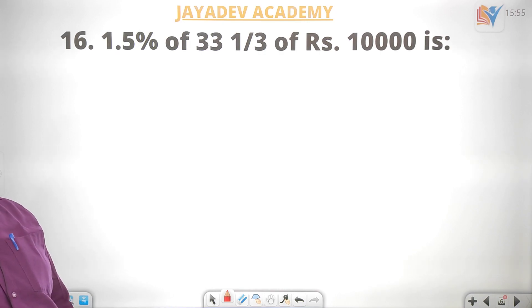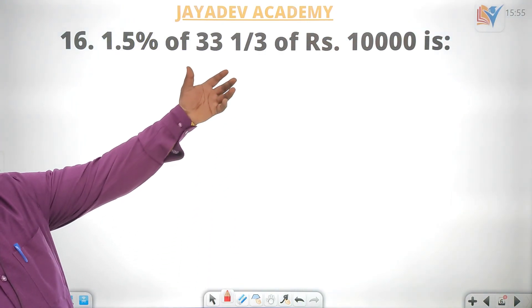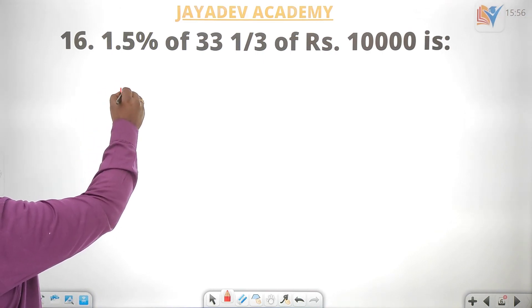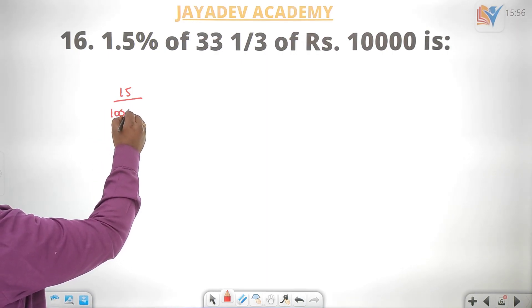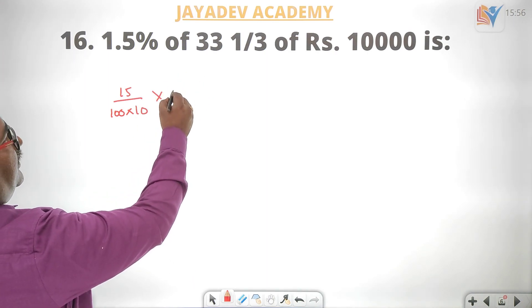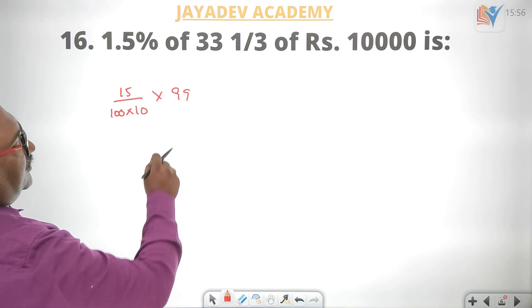Next question: 1.5% of 33 and 1/3 of 10,000. You can see the fraction: 33 and 1/3 into 1.5 of 10,000. That is 1 by 5 divided by 100, into 10, into half, and 1 by 3 into 10,000.